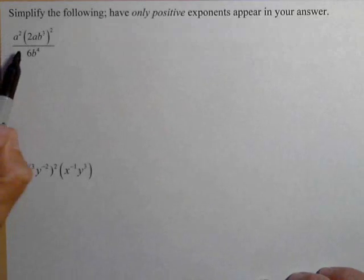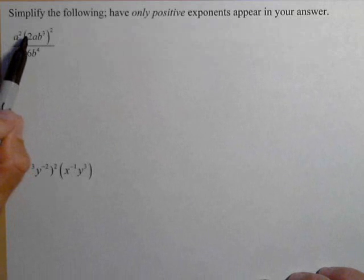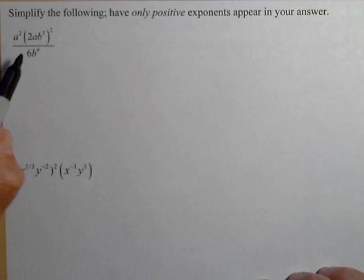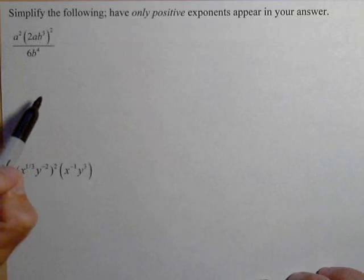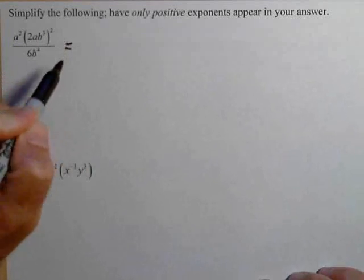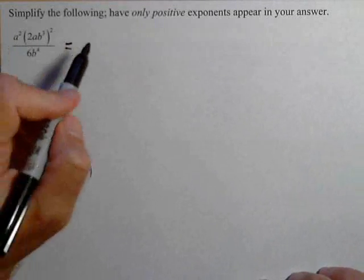For our first problem, we have a squared times the quantity 2ab cubed squared over 6b to the fourth. First, we're going to simplify the top and then see what we can cancel.